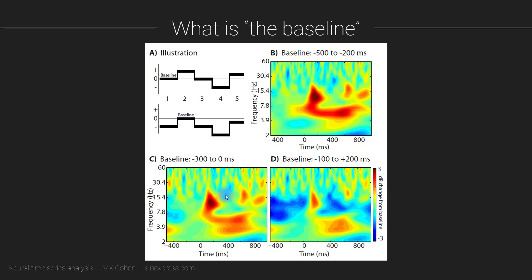Now comparing panels A and B: I claim that using −500 to −200 ms is a better baseline choice than −300 to 0 ms. I'd like you to pause and think about why. The reason is that at time zero there is some temporal leakage from post-stimulus activity. Whenever you do time frequency analysis through wavelet convolution or other methods, you always have some temporal smearing. When a wavelet is centered at time zero, it will include some activity from the post-stimulus window in the baseline estimate.